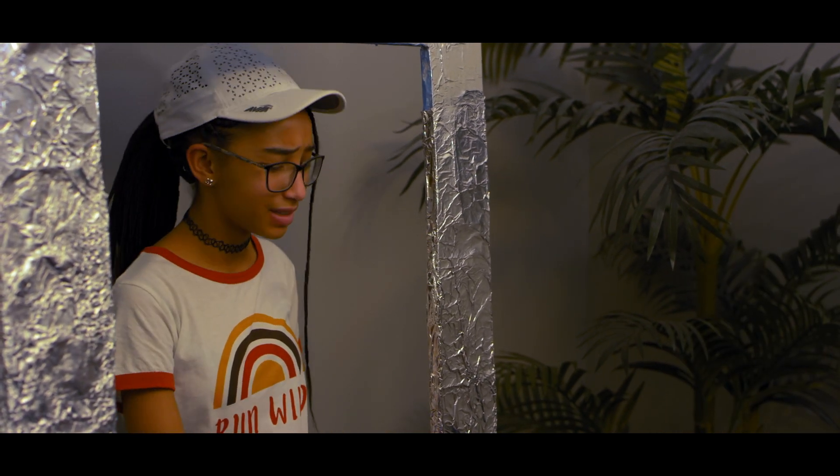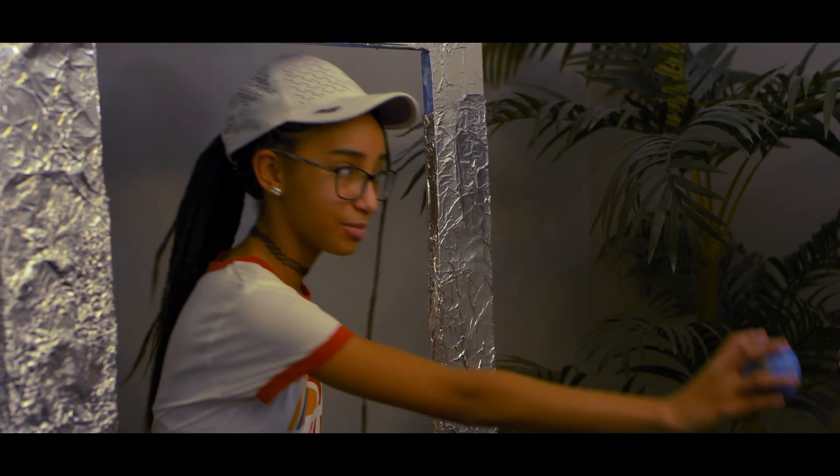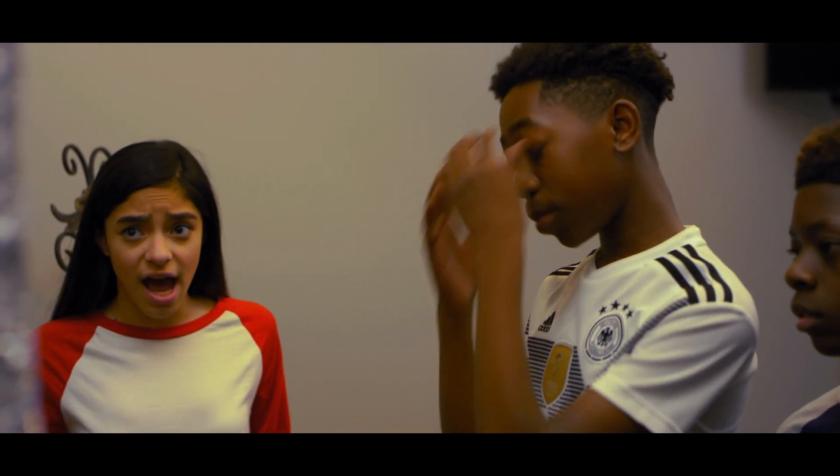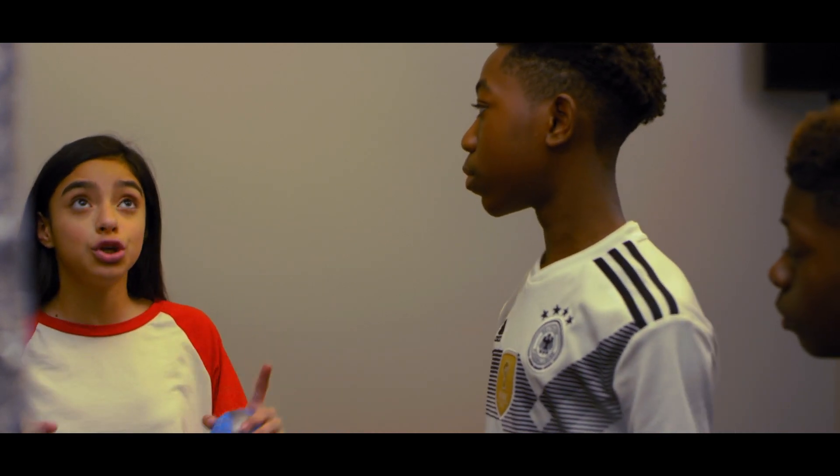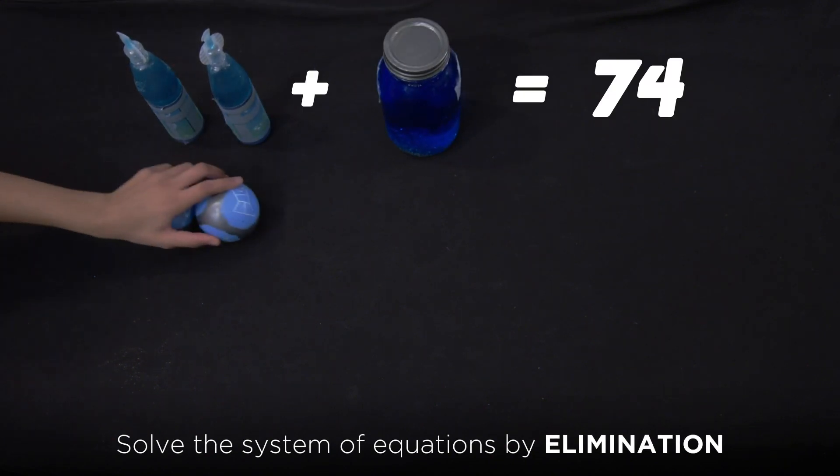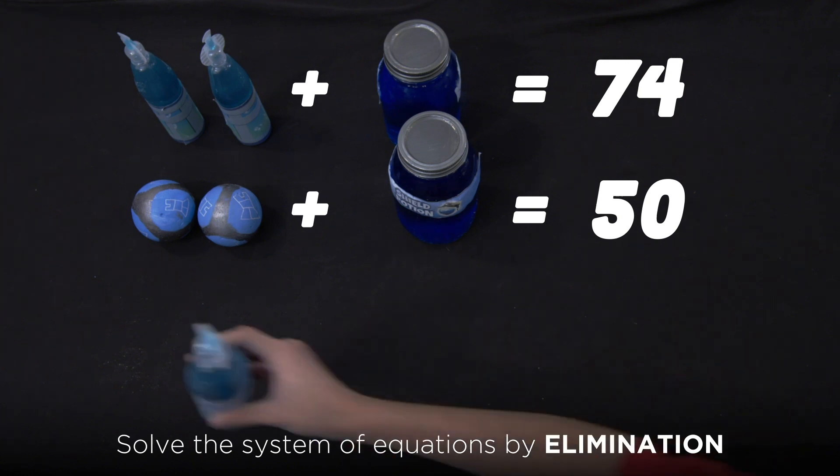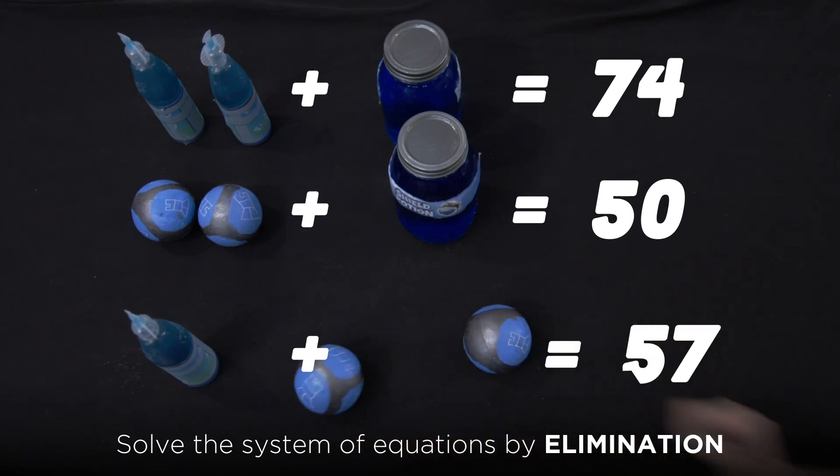For some odd reason, the system didn't seem to scan this Algefort. You're gonna have to wait for the system to reboot. We don't have that kind of time. Luckily, I think I know how to solve it using elimination. I purchased two HEPTA jugs and one Slow Pot for 74 V-Bucks. Jordan purchased two Algeforts and one Slow Pot for 50 V-Bucks. And Robert purchased one HEPTA jug and two Algeforts for 57 V-Bucks.